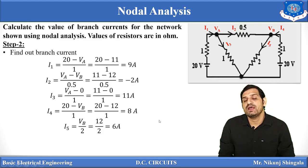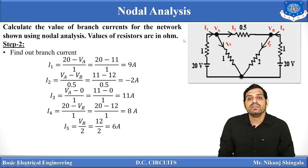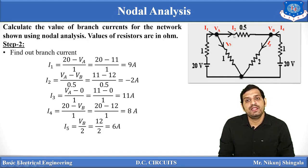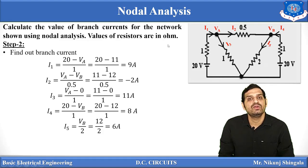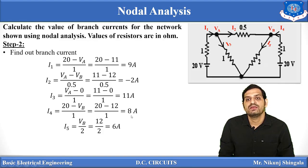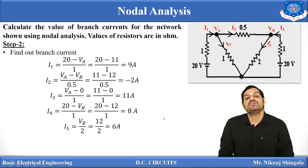To verify: at node A, I1 = I2 + I3 → 9 = −2 + 11 = 9 A. Correct. At node B, I2 + I4 = I5 → −2 + 8 = 6 A. Correct. So all the answers we obtained are verified.